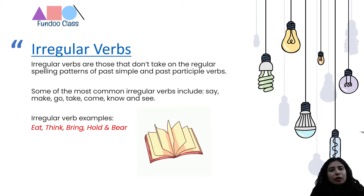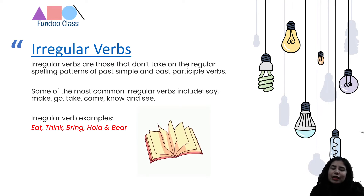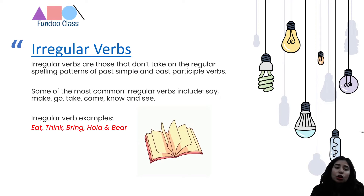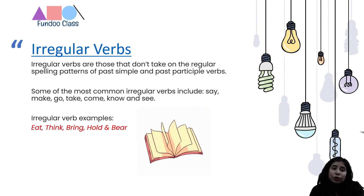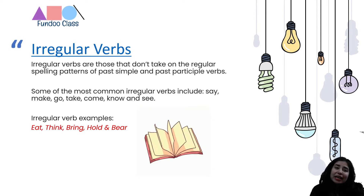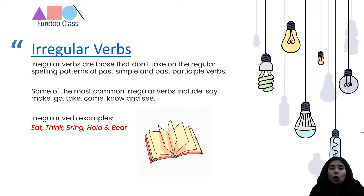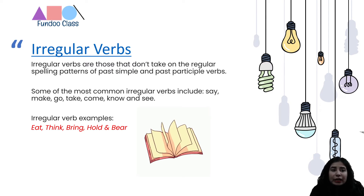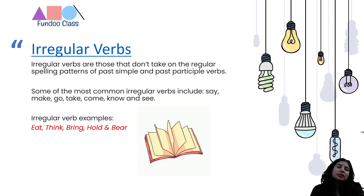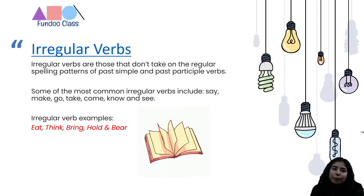For example: bring, brought, brought. Think, thought, thought. Know, knew, known. Make, made, made. Go, went, gone. So for all these verbs, when we talk about first, second, and third form, there is no set spelling pattern — it varies. That is the reason the word 'irregular' comes into the picture.